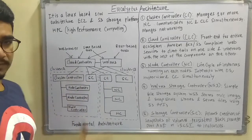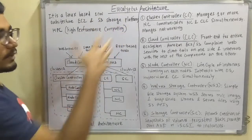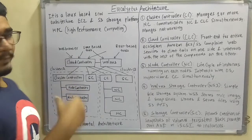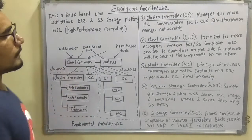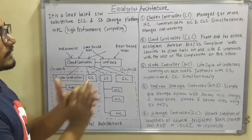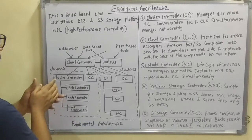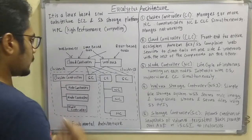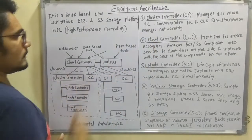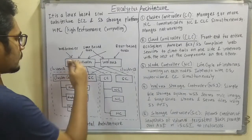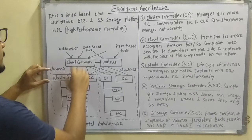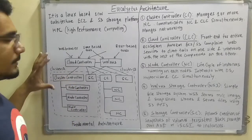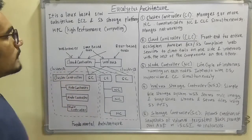Now let's look at the five main components in depth. First, the Cluster Controller (CC) manages one or more Node Controllers. As you can see, it can be three or any number. It communicates with the Node Controllers and the Cloud Controller (CLC) simultaneously and manages the networking between them. The Cluster Controller sits between these two components, acting as an intermediary for all communication from the Node Controllers up to the Cloud Controller.